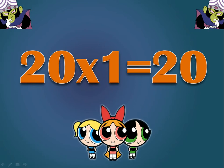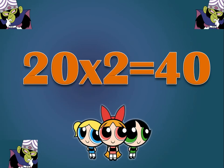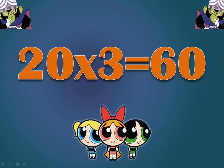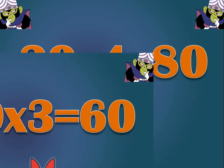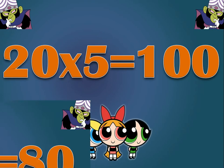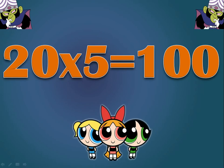2 times 1 is 20. 2 times 2 is 40. 2 times 3 is 60. 2 times 4 is 80. 2 times 5 is 100.